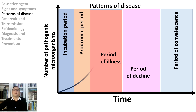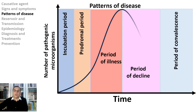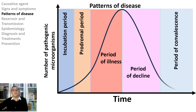The period of illness is when you are getting sicker and sicker until you feel really bad — how bad depends on the disease. The period of decline is when you turn the corner and feel better and better each day. In the period of convalescence, you are regaining your strength and feeling better, but still need to take things easier. You are still infectious during the period of convalescence.